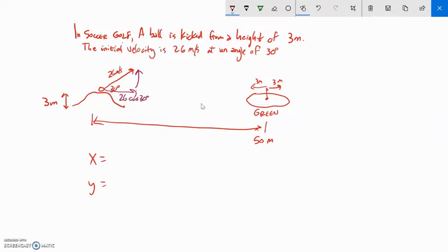The upward component is 26 times the sine of 30 degrees. In the x direction, it's 26 times cosine of 30 degrees times t, where t is time.